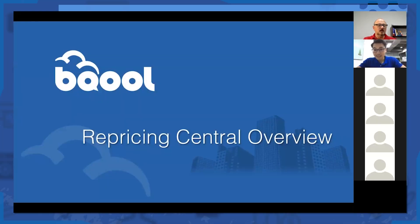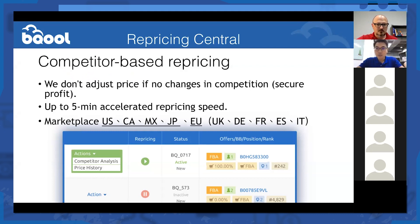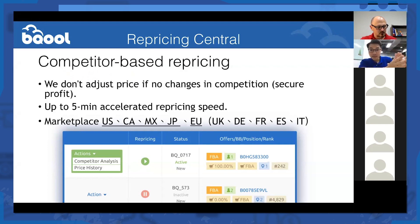Just a brief dive into Repricing Central. We are competitor-based repricing, which means we only change your price based on the targeted competitor's price change. We are not algorithmically priced — we are a rule-based repricer. That means we change your price based on the competition and also based on the rules you configure.